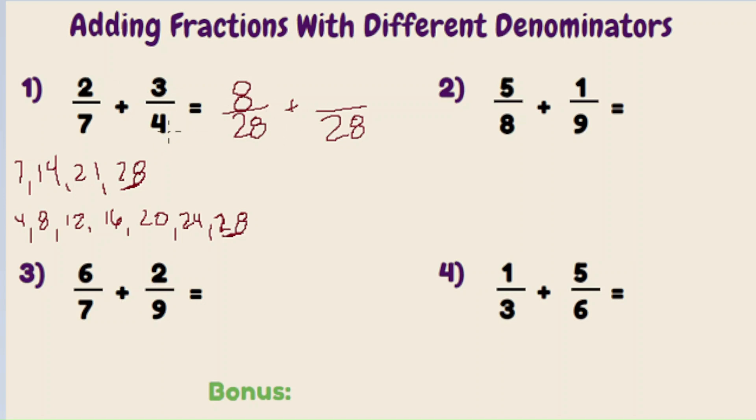Same thing for the three-fourths. Four goes into twenty-eight seven times. So four times seven is twenty-eight. Three times seven is twenty-one.